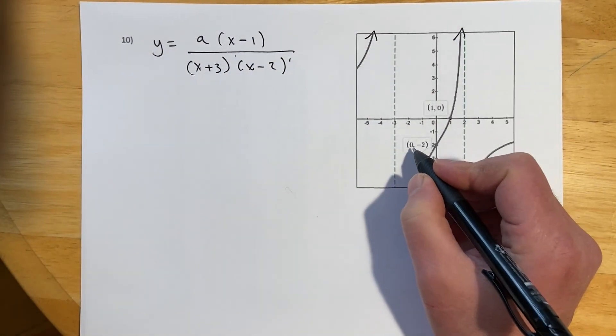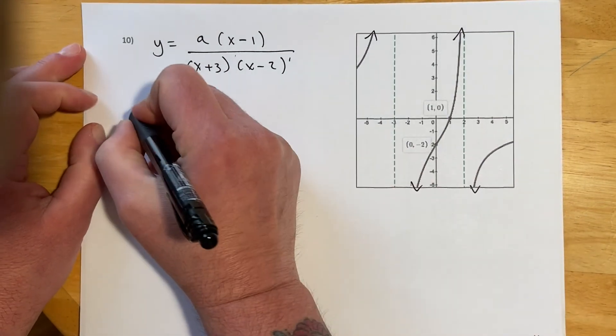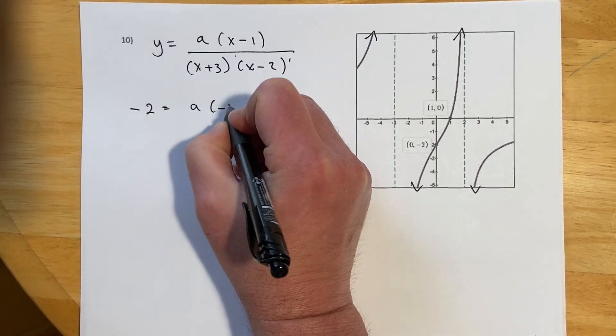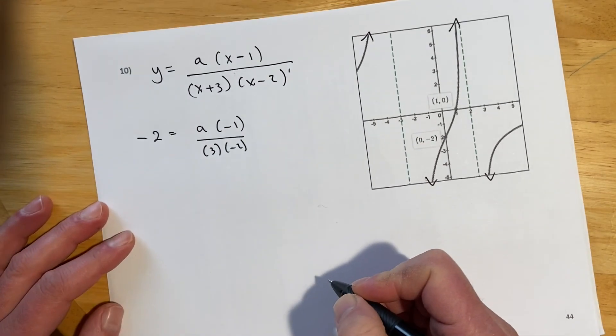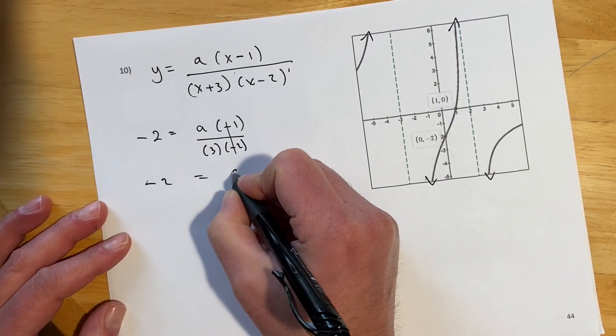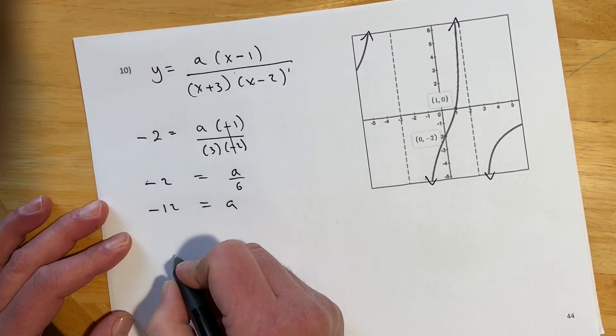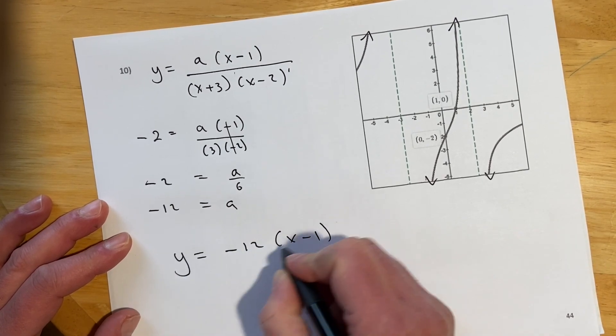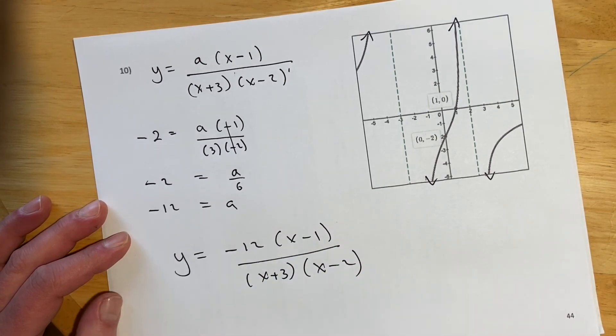And this time, I do have that 0, negative 2 there. So I can use that to find my stretch factor. So negative 2 equals A times negative 1, and then 3 and negative 2. So do that. Negative 2 equals A over 6. Multiply the 6 up. And it looks like A is negative 12. So our final here is Y equals negative 12, X minus 1, X plus 3, and X minus 2.